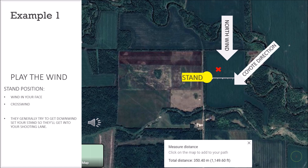Playing the wind is really important because a canine's nose is very strong — they have a really strong sense of smell. In this particular field example, there's a north wind. You can see the field measures 350 meters across. Our stand placement is about 80 to 100 meters from where we'd place the decoy, marked with an X. With a north wind, it's not exactly in our face — it's a bit of a crosswind.